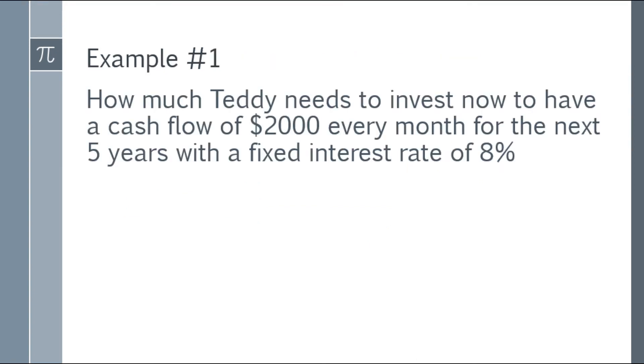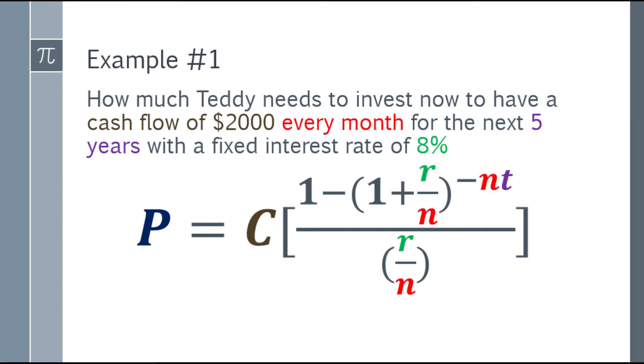So let's have some examples. Example number 1: How much Teddy needs to invest now to have a cash flow of $2,000 every month for the next 5 years with a fixed interest rate of 8%? First step, let's write the formula.